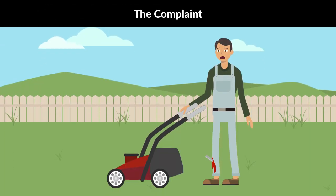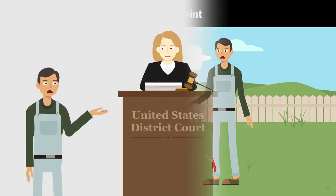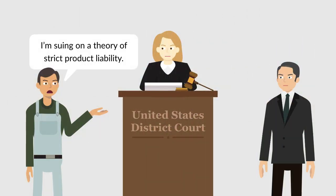Let's use an example to explore the most important pleading, the complaint. A homeowner was injured when the blade flew off his lawnmower and struck his foot. The homeowner sued the manufacturer in federal court on a theory of strict product liability.